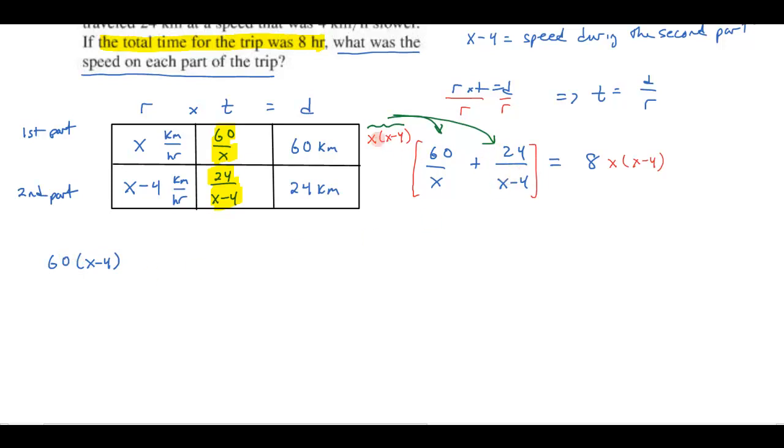So I get 60 times x minus 4. And then when I distribute over here, you see this x minus 4 is going to cancel the x minus 4. So I'll get the x times the 24. So that's plus 24x. Then over on the other side, I'll get 8x times x minus 4. So let's go ahead and multiply all this out. At least I'm rid of my fractions now.